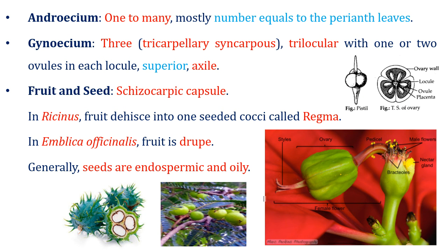The androecium is one to many, and mostly the number of androecium members is equal to perianth leaves. In gynoecium, there are three — tricarpellary, syncarpous, and trilocular. In each locule, one or two ovules may be present. Gynoecium is superior. As the flower is hypogynous, the gynoecium is superior. Axile placentation is present. Fruit is a schizocarpic capsule; in Ricinus, a regma type of fruit is present, and in Emblica officinalis, the fruit type is drupe.